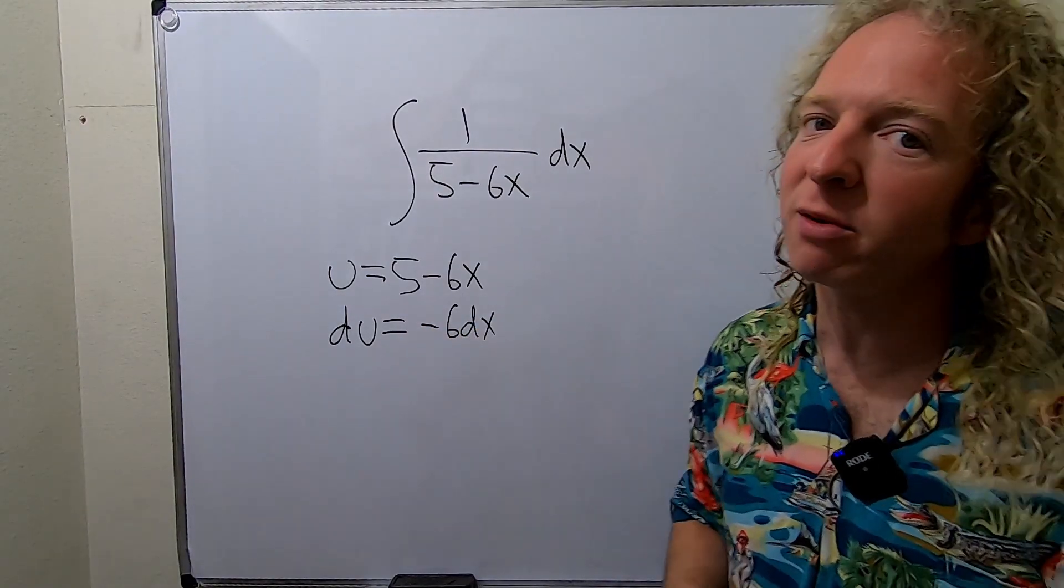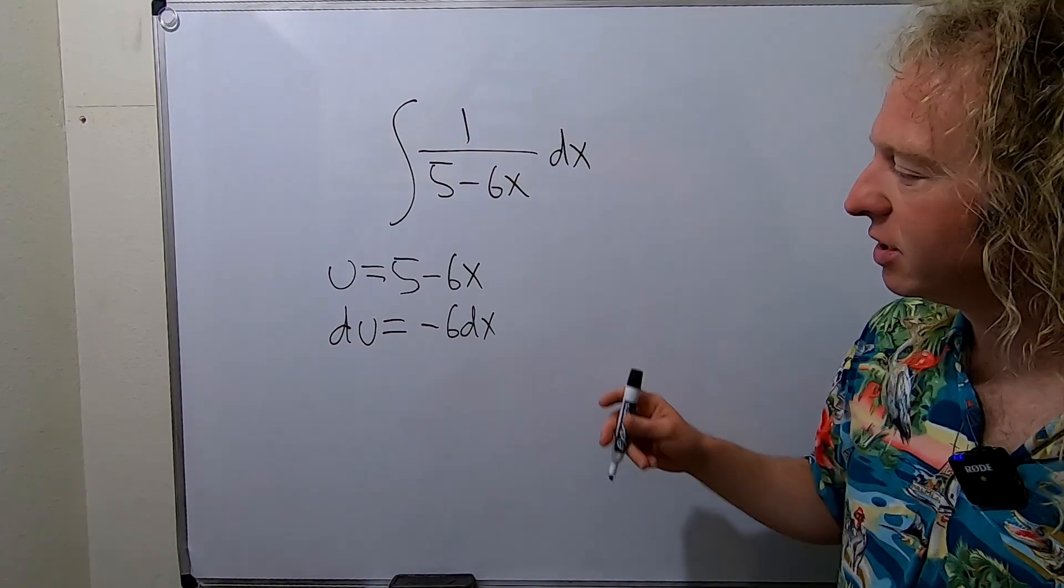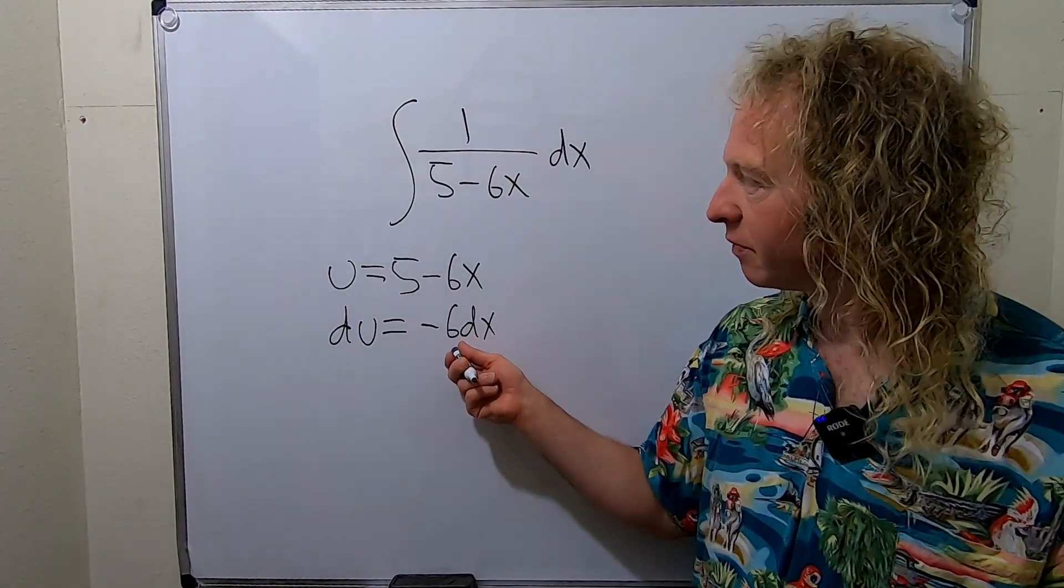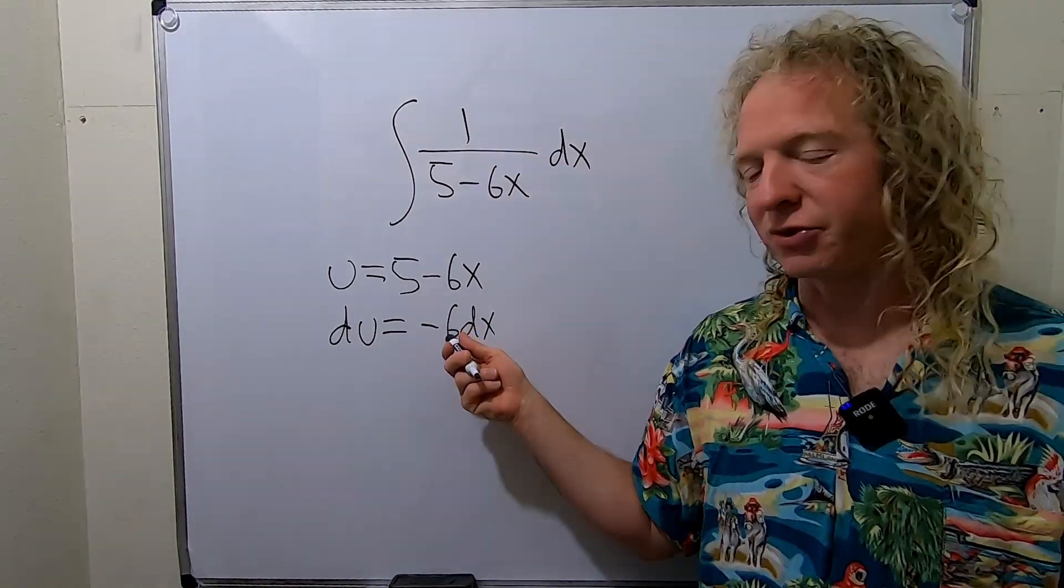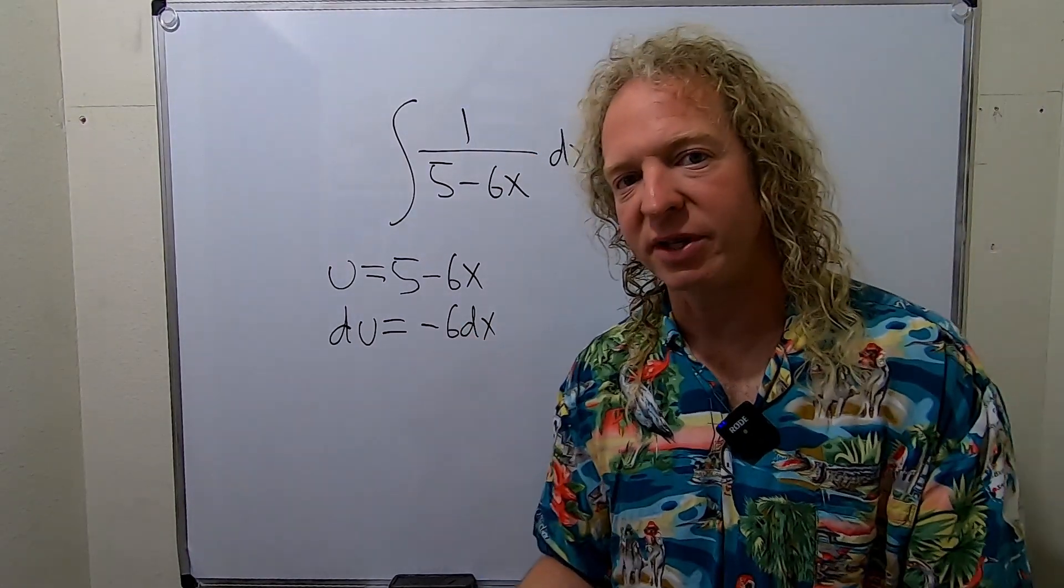This is a nice problem because it's not like super easy but it's still pretty easy. So now we have to make this look like this. So here there's a 1 dx, here there's a negative 6 dx, so we have to get rid of the negative 6.